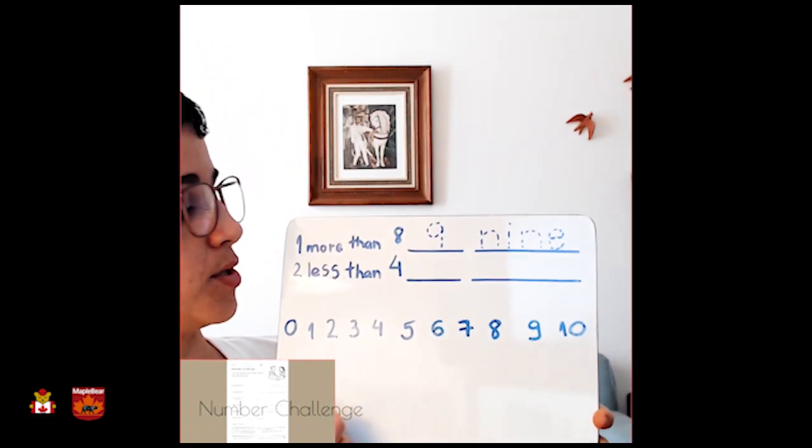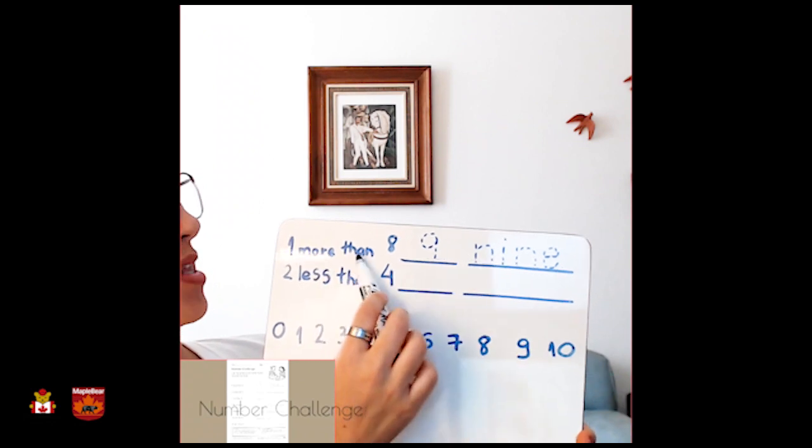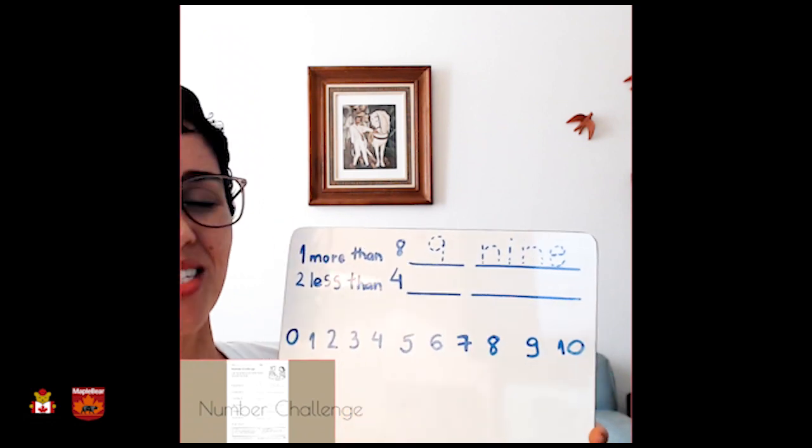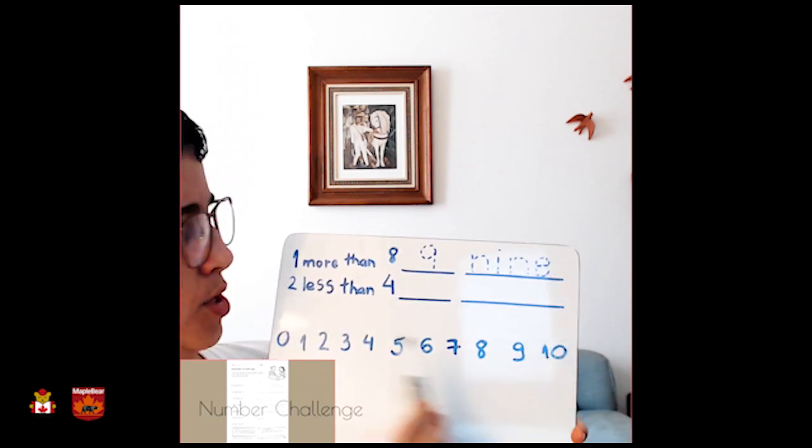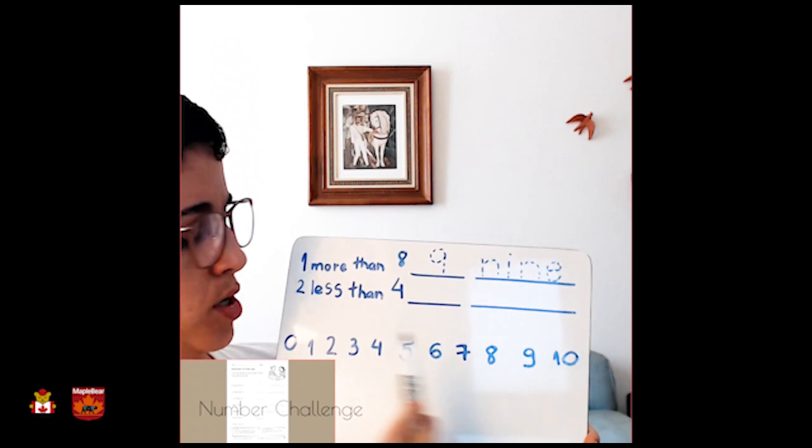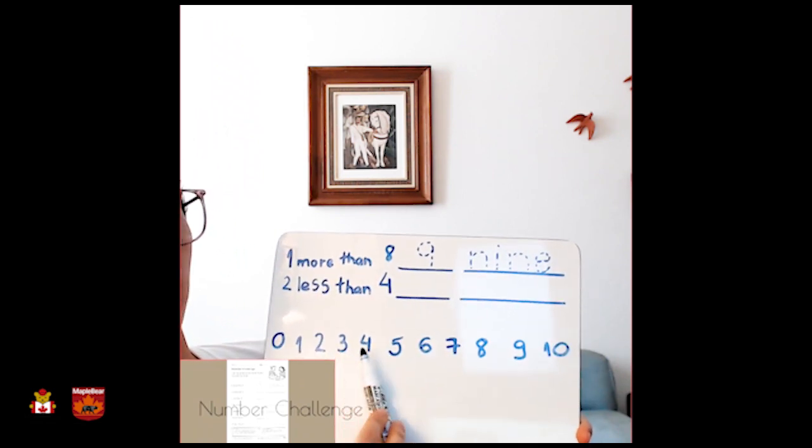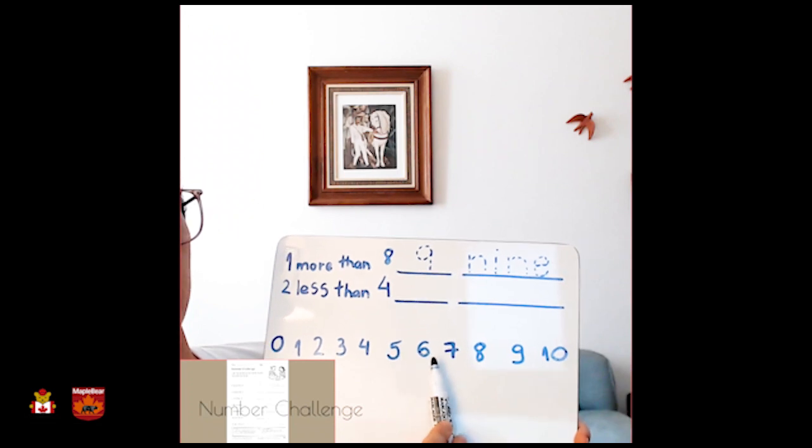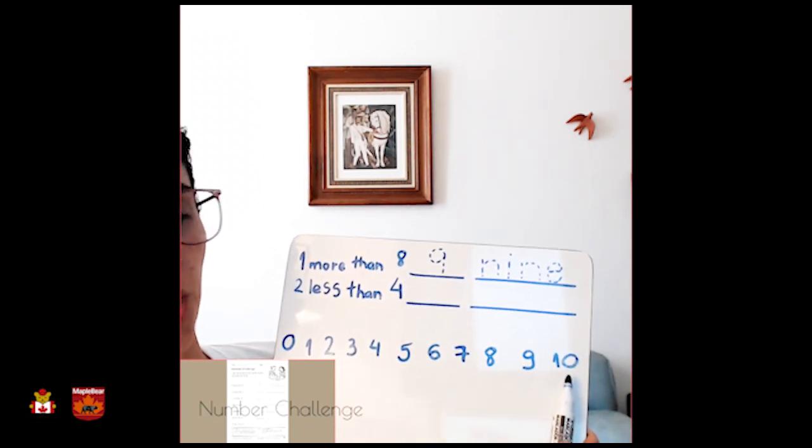On the first line, you're going to see this: one more than eight. Let's do a number line here to help us from zero to ten. Let's count together. Zero, one, two, three, four, five, six, seven, eight, nine, ten.